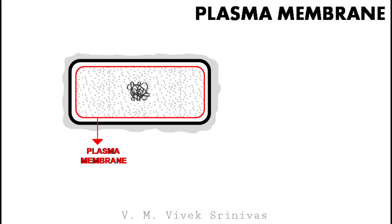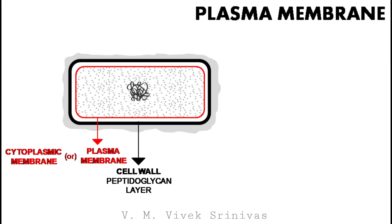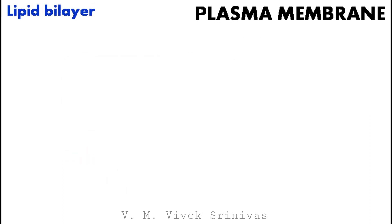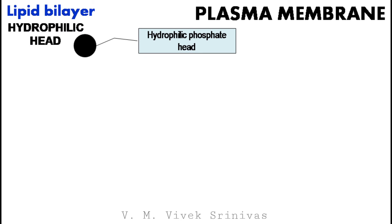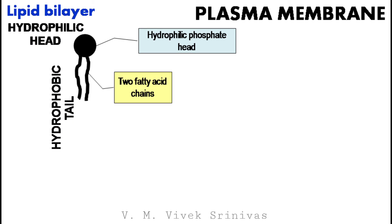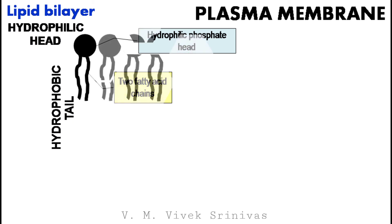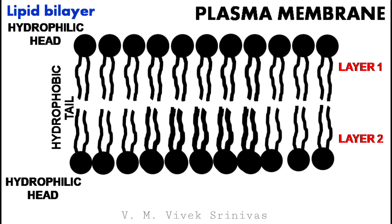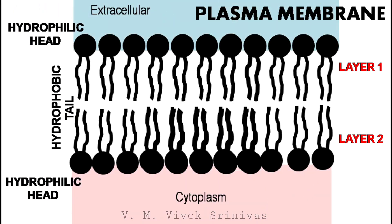The next structure is the plasma membrane, also referred to as the cytoplasmic membrane. It is a thin structure lying inside the cell wall. This covers and protects the cytoplasm of the cell. This plasma membrane is a lipid bilayer, also referred to as the phospholipid bilayer. It is composed of the hydrophilic phosphate head and the hydrophobic tail, containing two fatty acid chains. These phospholipid molecules are arranged in rows to form a layer, and two layers are arranged in parallel to each other to form the phospholipid bilayer.